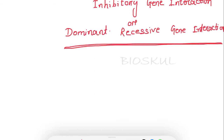Hey everyone, welcome back to BioSchool. Today we are going to learn about another type of gene interaction: inhibitory gene interaction, also known as dominant recessive gene interaction.